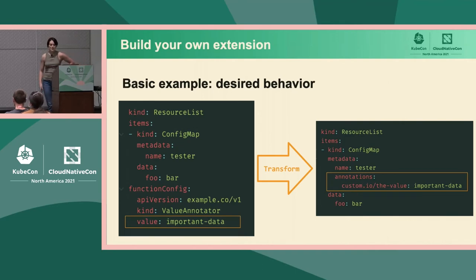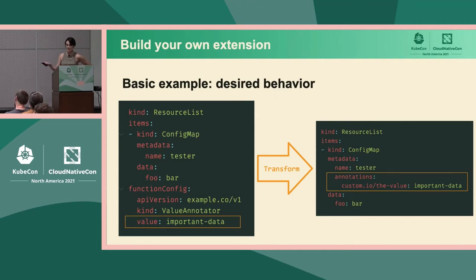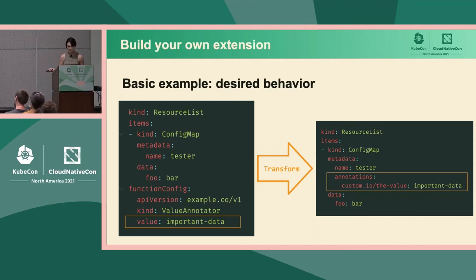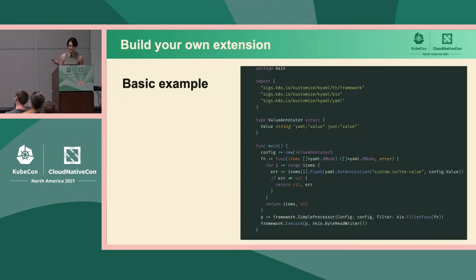Would you actually implement this? No — Kustomize has a really powerful annotation feature built right in, so you wouldn't bother doing this manually. The purpose of this example is to show how easy it is to reproduce simple Kustomize-style transformations using the KAML SDK.